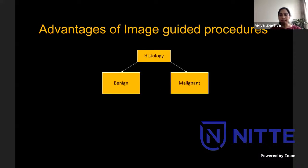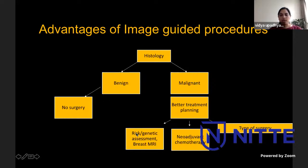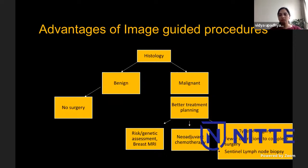If histology comes back as benign, we have avoided a surgery. If malignant, we can plan treatment better - genetic assessment, breast MRI to determine multifocal disease or extent of disease, especially in lobular cancer. If the lesion is big enough, we can give neoadjuvant chemotherapy to reduce lesion size before surgery. Even the type of surgery can be planned better, with fewer operations. If the axillary lymph node is positive, we can avoid sentinel lymph node biopsy, which is time-consuming, resulting in less GA time for the patient.